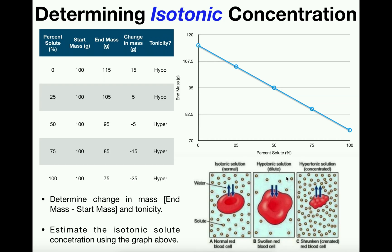To make this graph, you put the percent solute on the x-axis and the end mass on the y-axis — this is one way to do it — and then graph the points. For example, for the zero percent solution, zero is the x-value and the end mass is 115, so the first point is at (0, 115). The second point at 25 percent has an end mass of 105, so it's at (25, 105). You graph all these points and they'll come very close to generating a straight line.